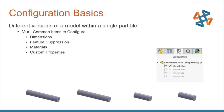Configurations are really core SolidWorks functionality — different versions or variations of a model stored within a single part file. One part, different geometrical versions. Most commonly we use dimensional changes: a little bit larger, smaller diameter, and so on. We can suppress or unsuppress features, configure materials, configure custom properties — all unique per configuration. There are dozens of parameters we can control in configurations and ultimately in our Excel-based design tables.